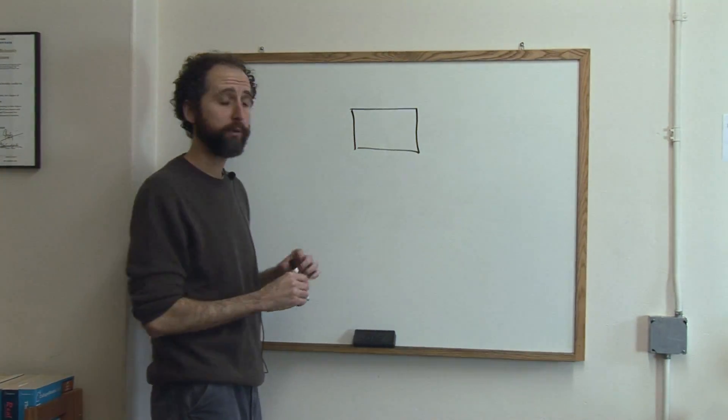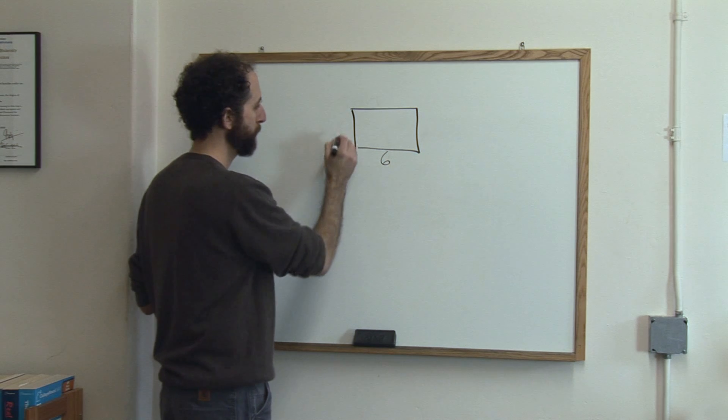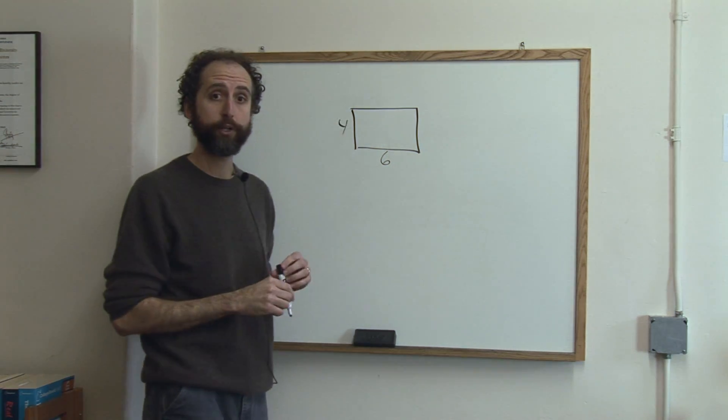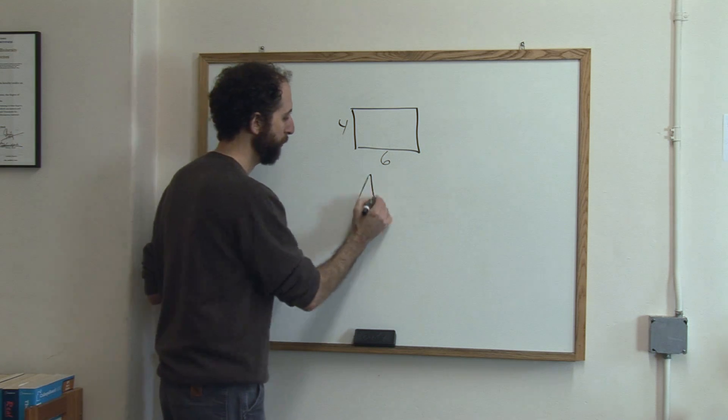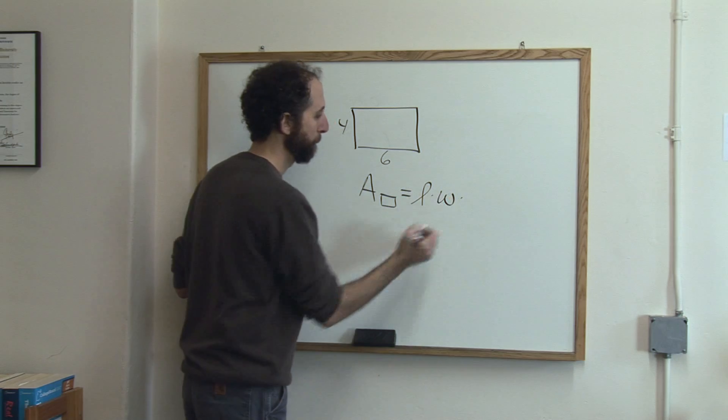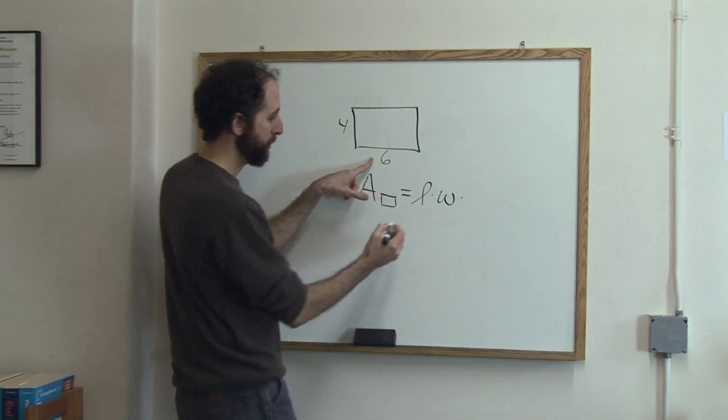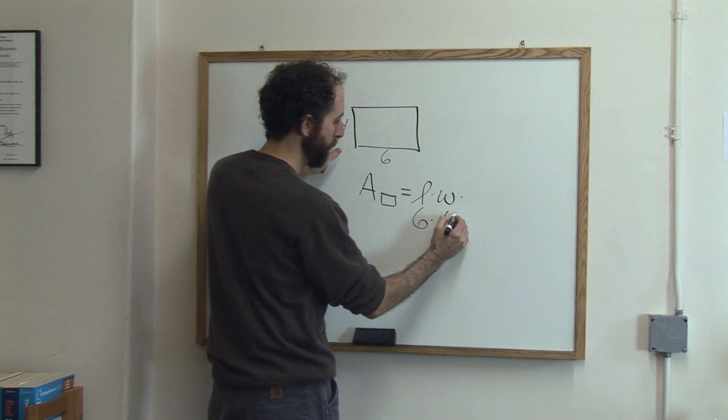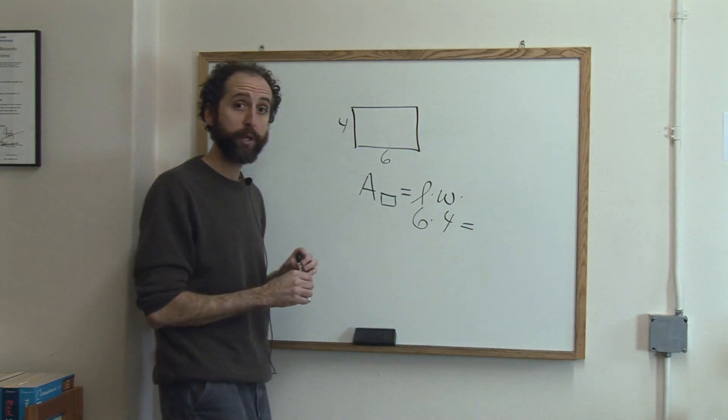So if we had a rectangle that was 6 units by 4 units, and we wanted to calculate the area of that shape, we would do area of a rectangle equals length times width. So let's call that the length. So it would be 6 times the width, we'll call that 4. So the area of this rectangle is 24.